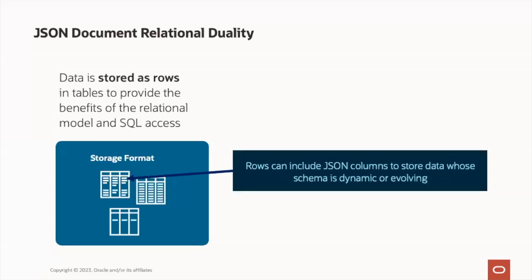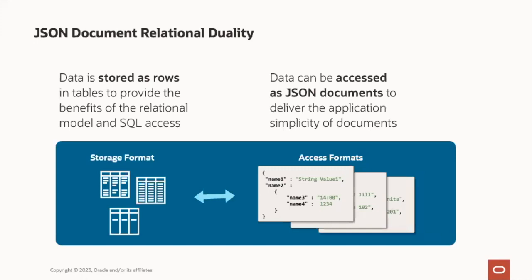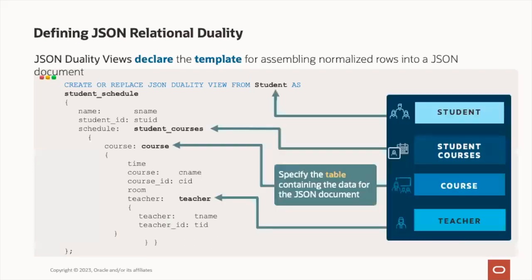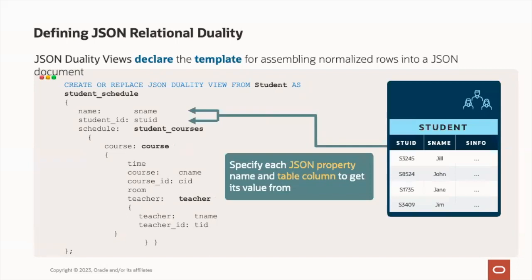In the JSON document relational duality model, data is stored as rows in tables to provide the benefits of the relational model as well as SQL access. Rows can also include JSON columns to store data whose schema is dynamic or potentially evolving, and data can be accessed as JSON documents to deliver the application simplicity of documents. JSON duality views declare the template for assembling normalized views into a JSON document. Here we can see that the view is accessing the student table — we're calling it student schedule — and the individual columns are associated with name-value pairs in this duality view.